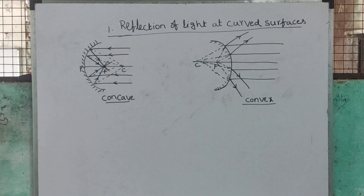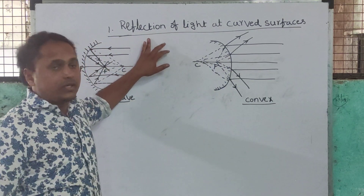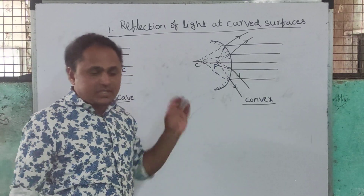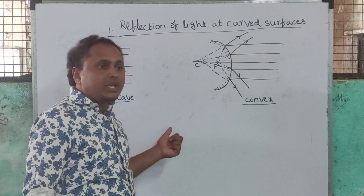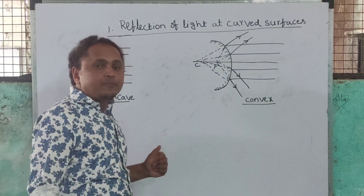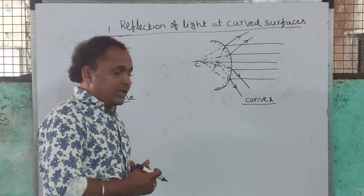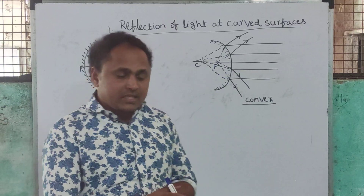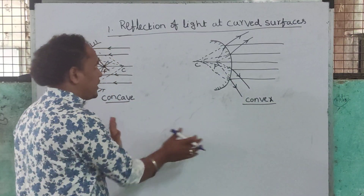Good morning and welcome. Today in physics we are discussing reflection of light at curved surfaces. In the previous class I explained what is a concave mirror and what is a convex mirror, how to recognize them, what is focus, center of curvature, focal point, focal length, pole, and radius of curvature. In this class I am going to explain three cases.